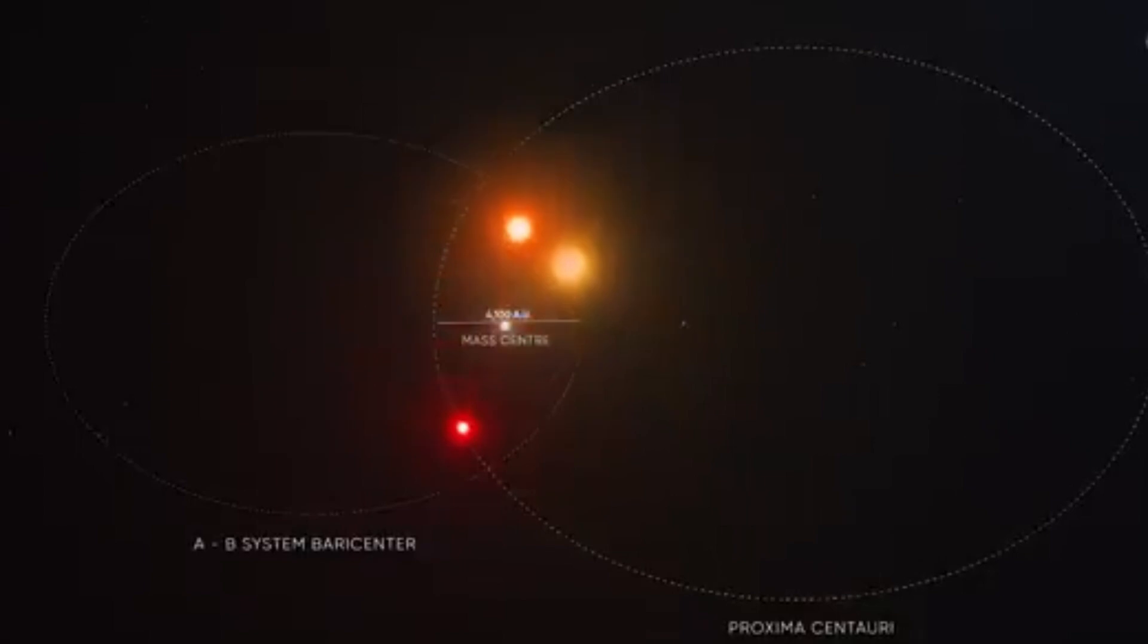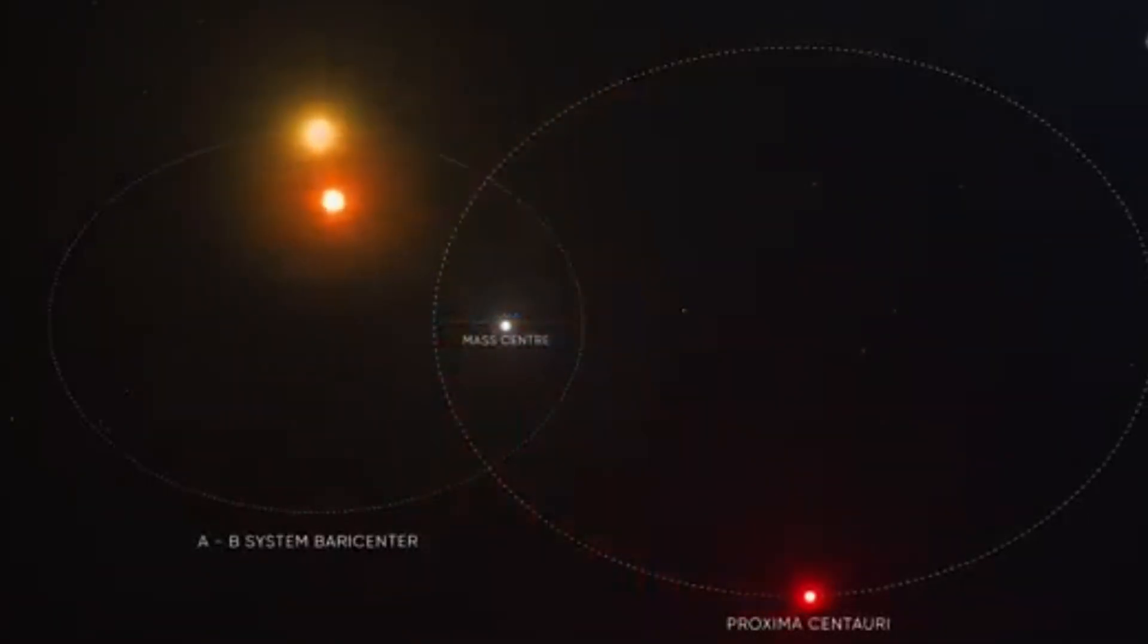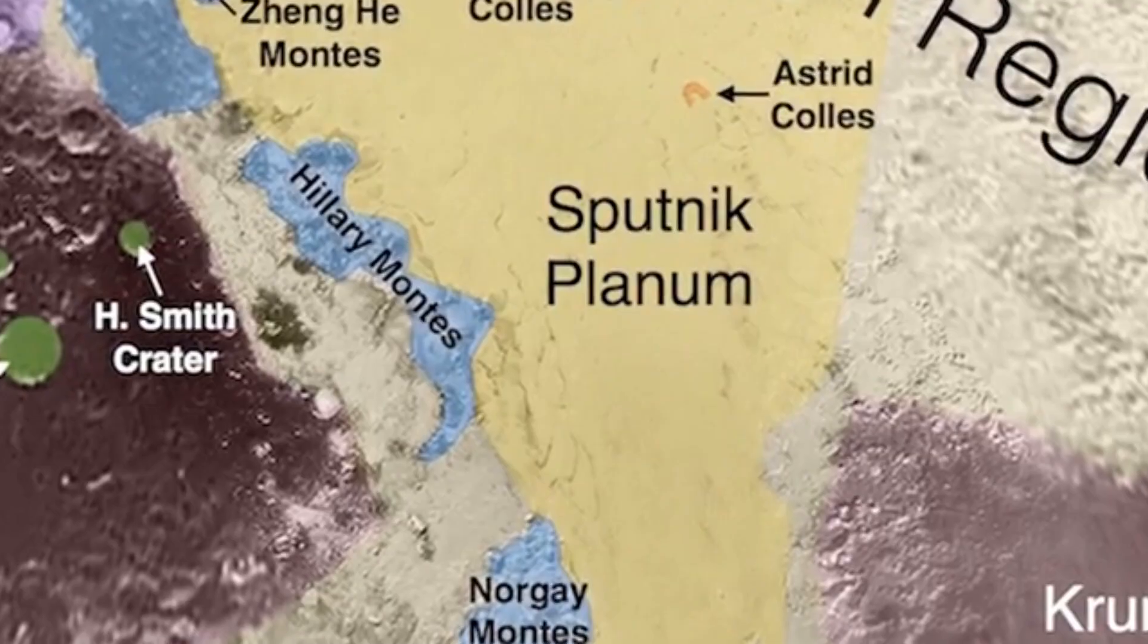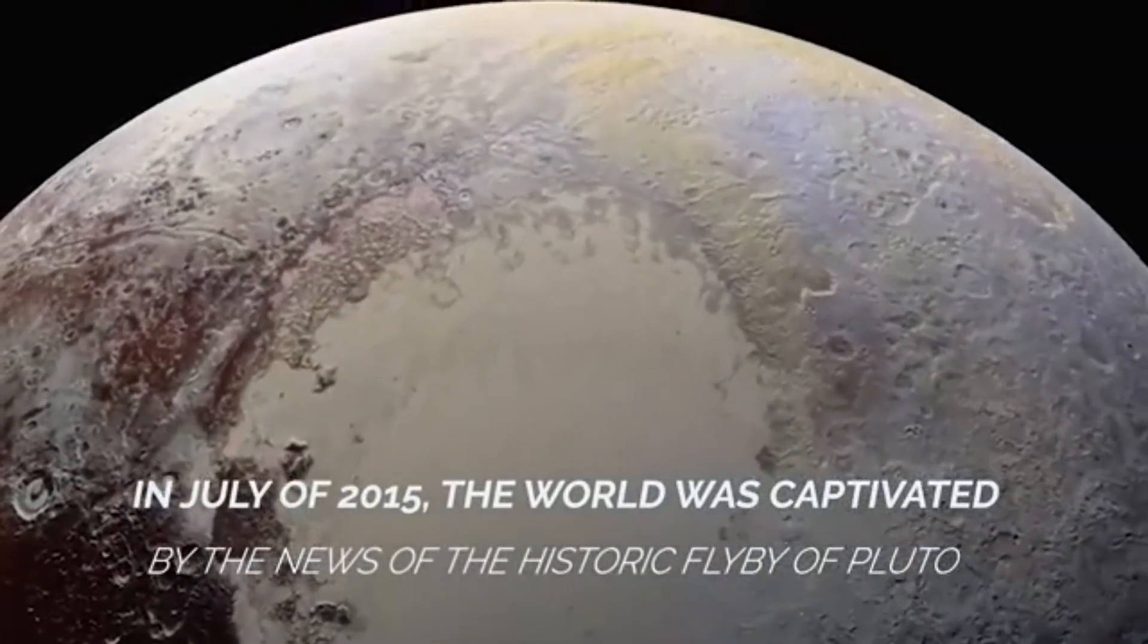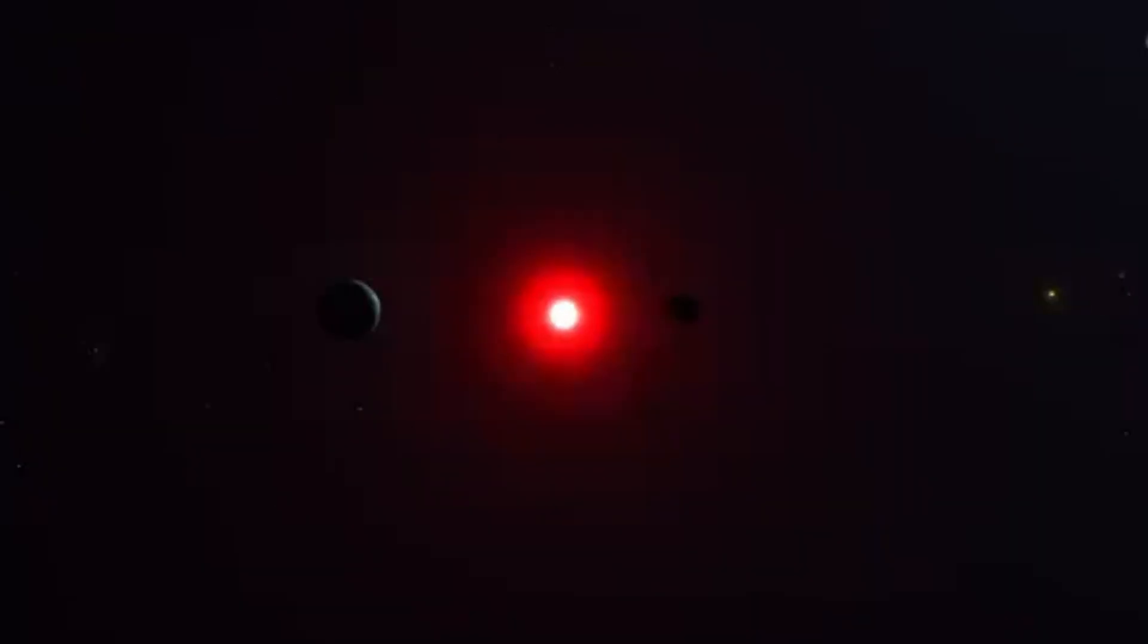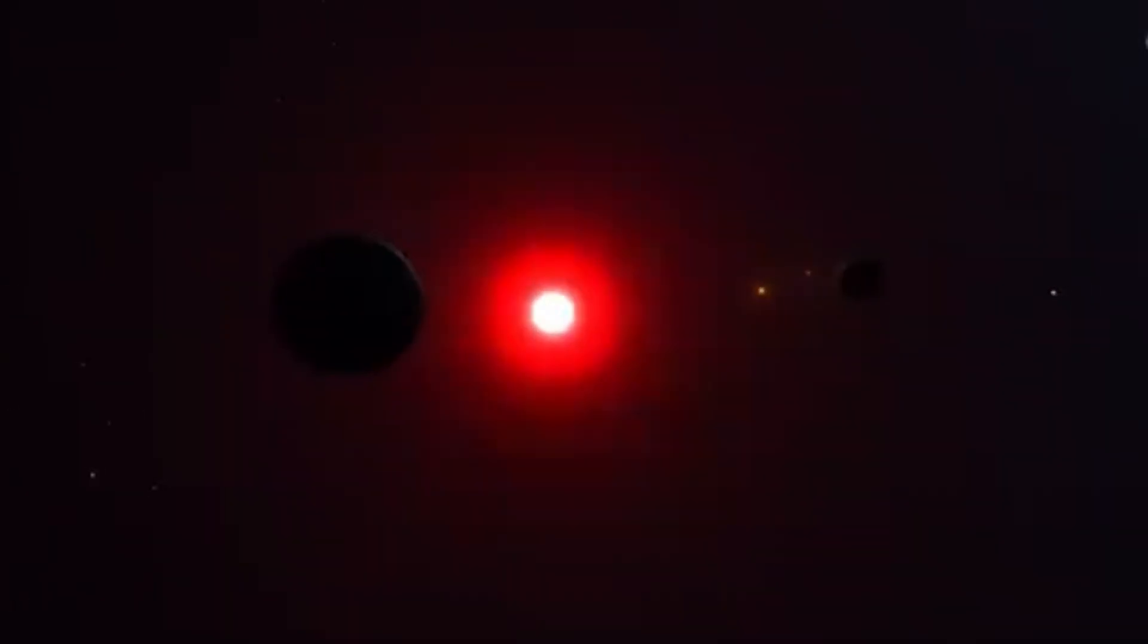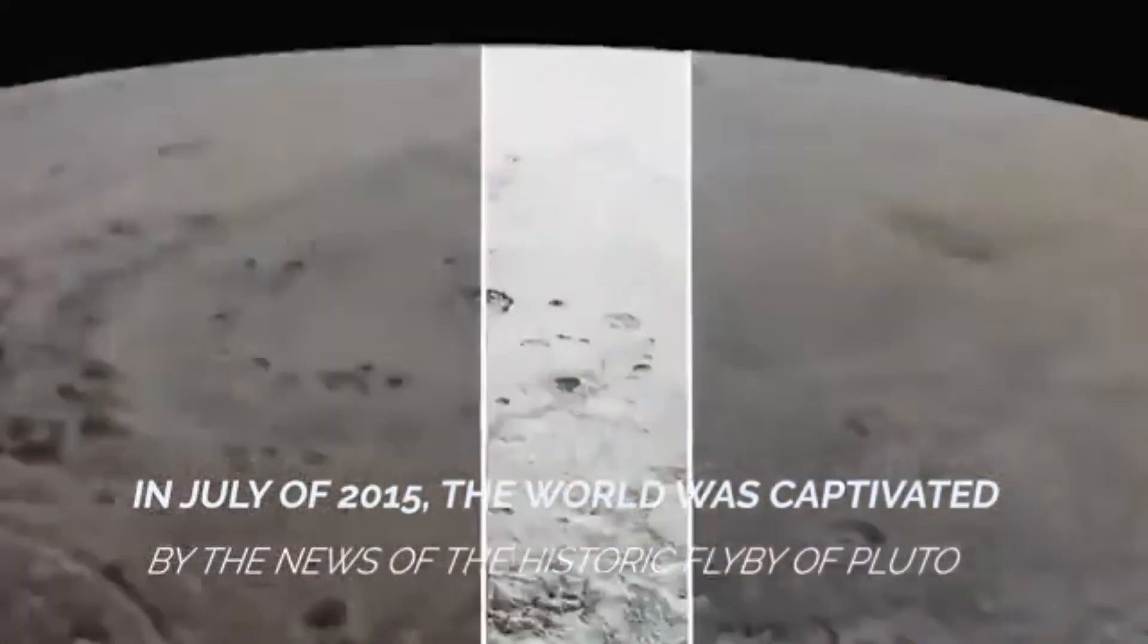Pluto is incredibly far away, yet it is still part of our own neighborhood. As we said at the beginning, the average distance between Earth and Pluto is 39 AU, or 5,906 million kilometers. That distance seems titanic until we compare it with that of Alpha Centauri, 4.367 light years, or 41.3 billion kilometers. In other words, Alpha Centauri is about 7,000 times farther away than Pluto.